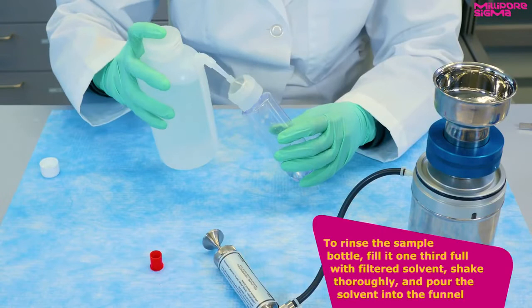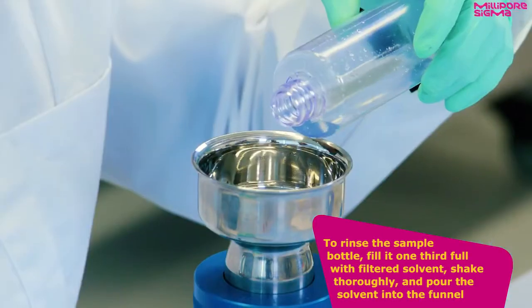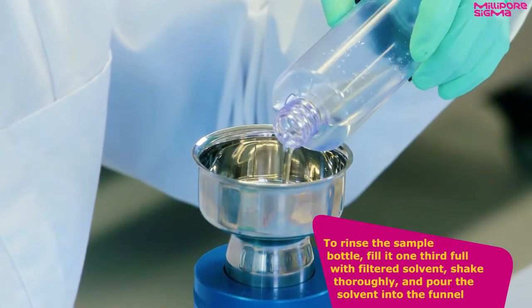To rinse the sample bottle, fill it one-third full with filtered solvent, shake thoroughly, and pour the solvent into the funnel.